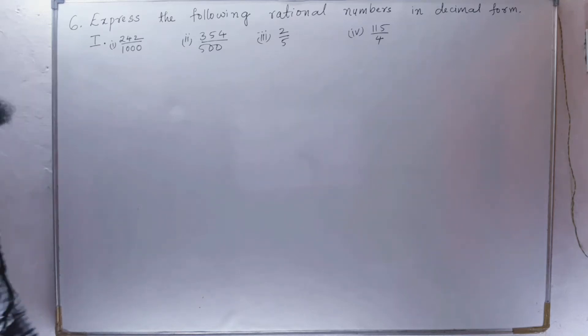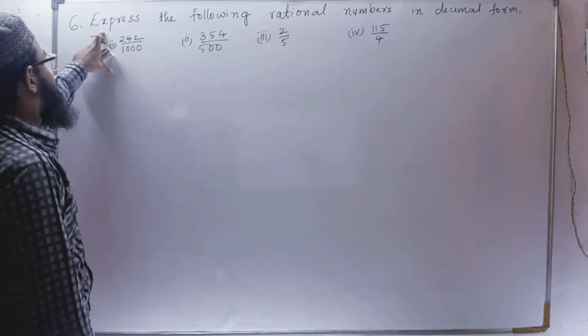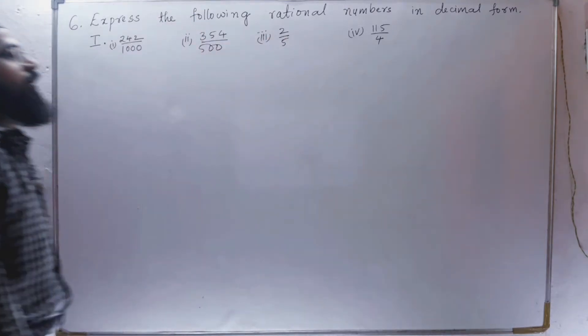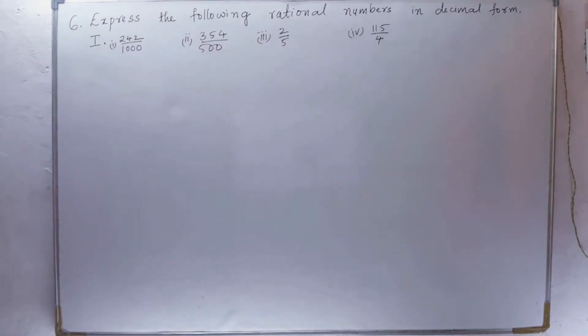Exercise number 1.1, sixth problem. Express the following rational numbers in decimal form. We have to express these numbers in decimal form. That means we have to divide this and we have to say what is the quotient in decimal.